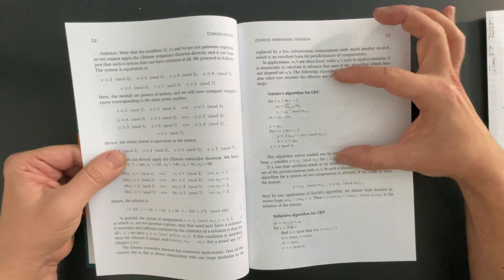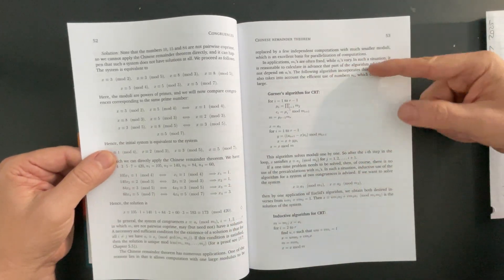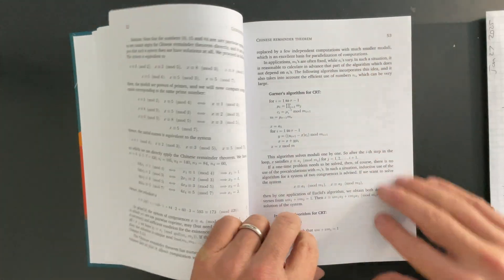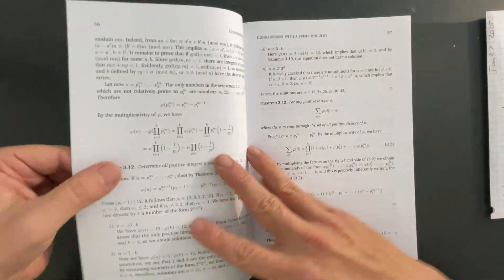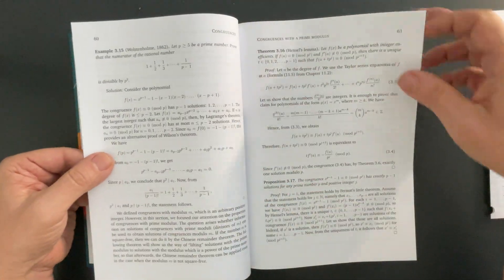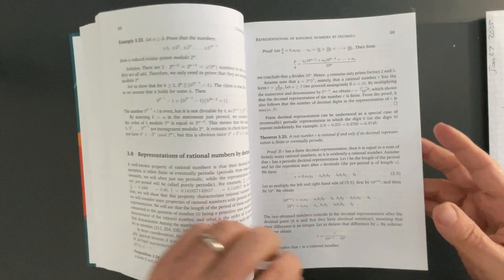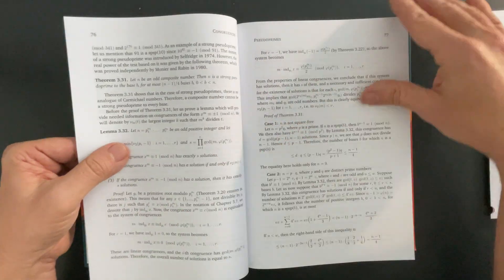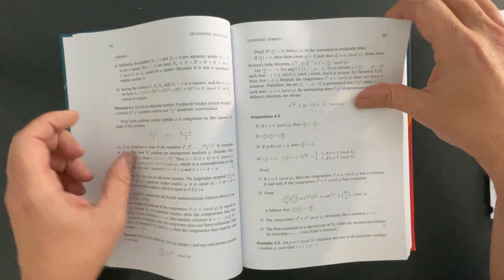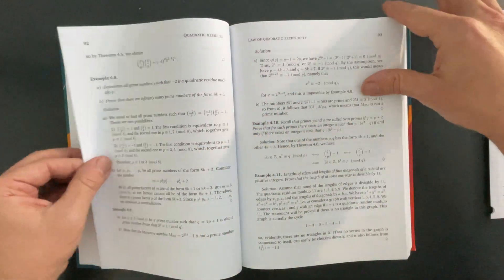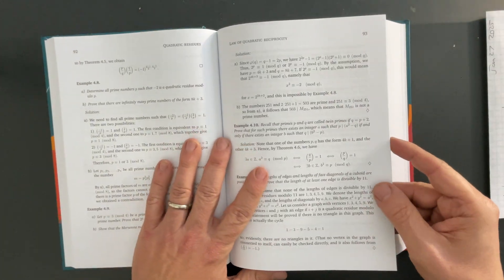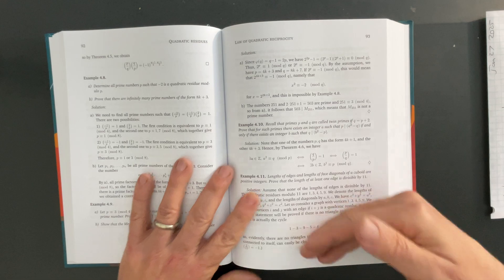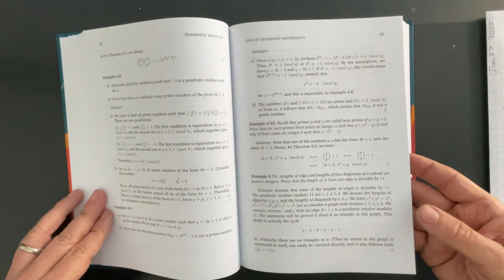Congruences, see again, Chinese remainder theorem, more algorithms included in the book. Then decimals and continued fractions. The Legendre symbol, you guys know, and girls, I love the Legendre symbol. So, quadratic reciprocity, one of the most important theorems, I believe, in all of mathematics.